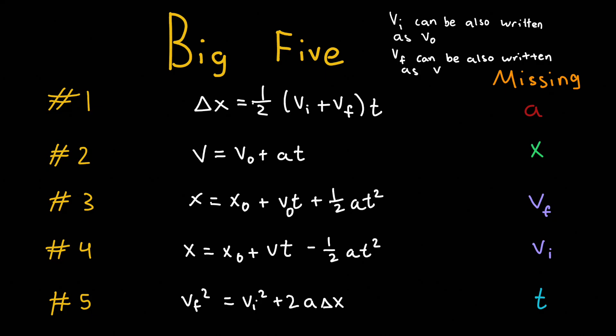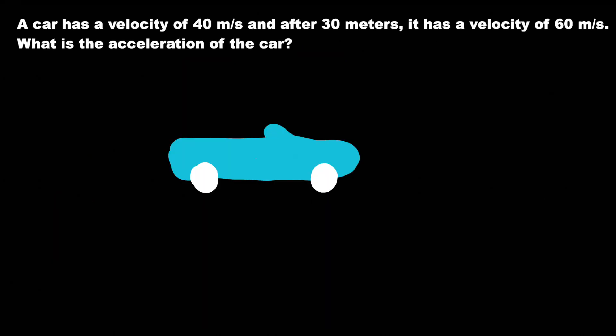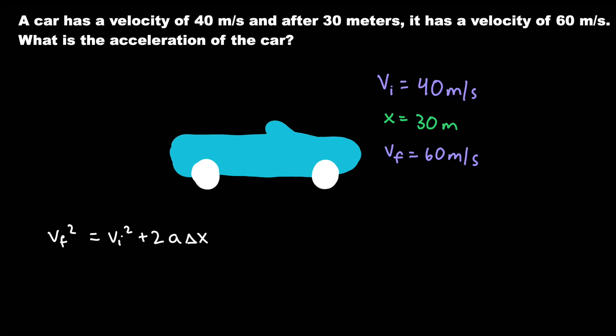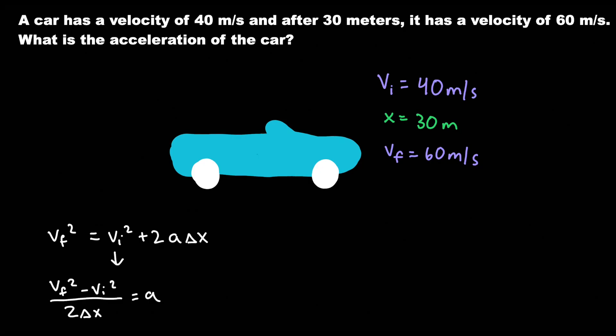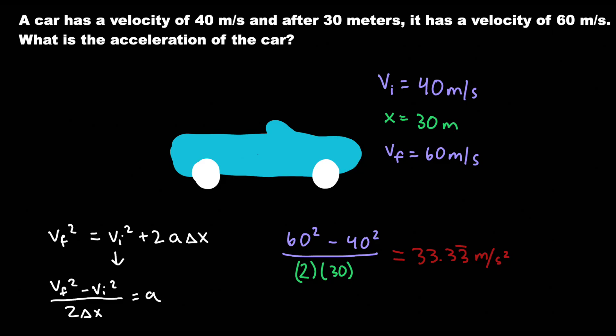To do kinematics in one dimension, we need to memorize the big five equations, which are listed out here. In all your kinematic problems, if you memorize these formulas and identify what's missing, you can solve all problems with ease. For example, a car whose velocity was 40 m/s accelerates over 30 meters to reach 60 m/s — what is the acceleration? We use equation five from the big five, the only equation without time, since time is not given. Plugging in initial velocity 40 m/s, distance 30 m, and final velocity 60 m/s, the acceleration comes out to about 33.33 meters per second squared.